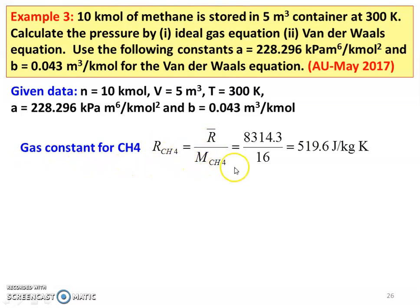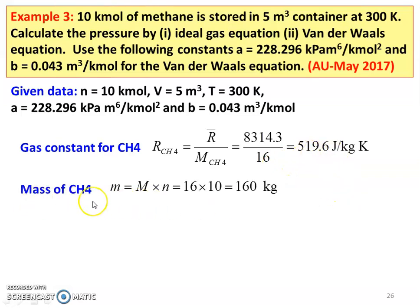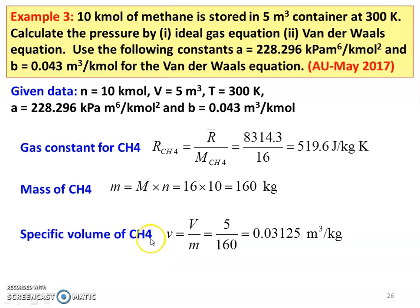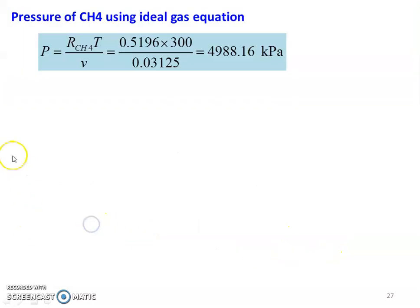Molecular weight of CH₄: carbon = 12, hydrogen = 4 molecules × 1 = 4, so 12 + 4 = 16. R_CH4 = 8314.3 / 16 = 519.6 joules per kilogram Kelvin. Mass of CH₄ = molecular weight × number of moles = 16 × 10 = 160 kg. Specific volume of CH₄: small v = V / M = 5 / 160 = 0.03125 m³ per kilogram. Pressure using ideal gas equation: P = R × T / v = 0.5196 × 300 / 0.03125 = 4988.16 kPa.